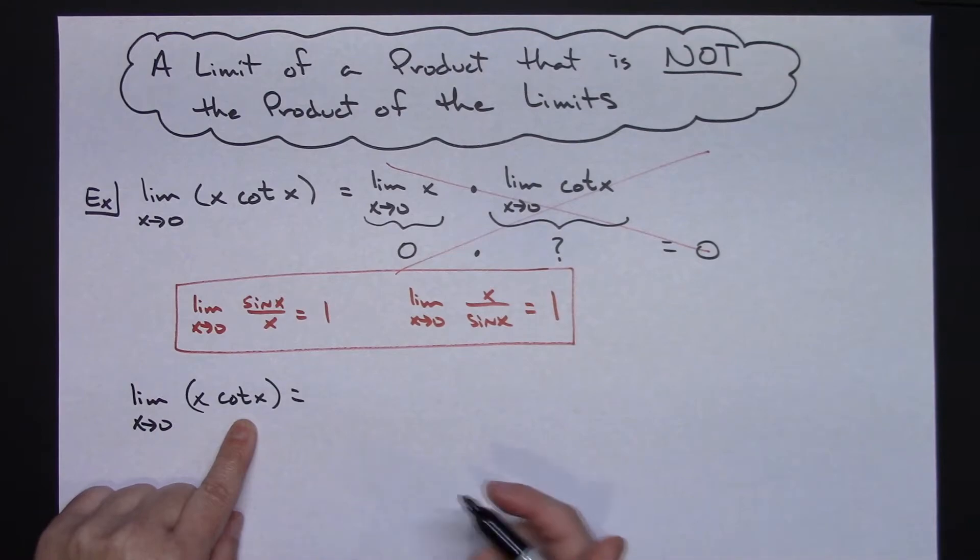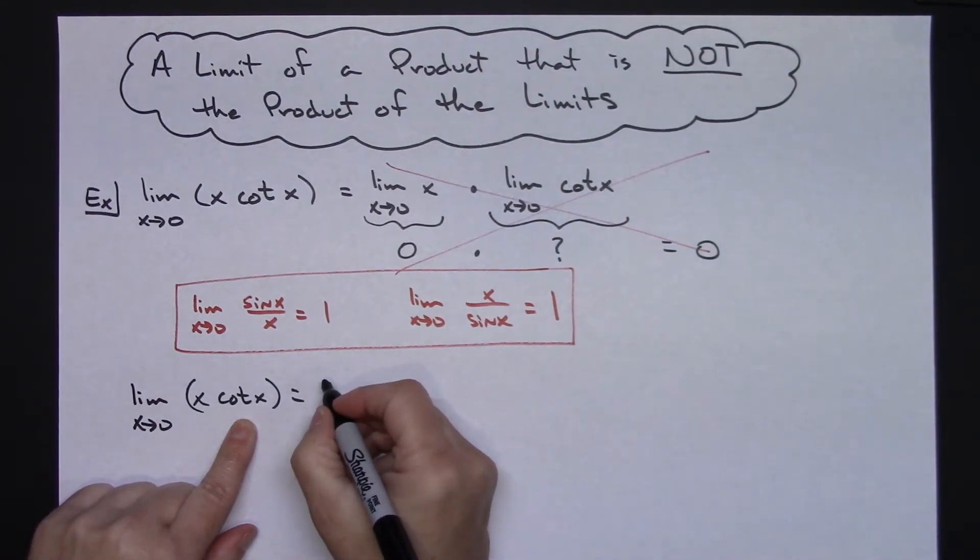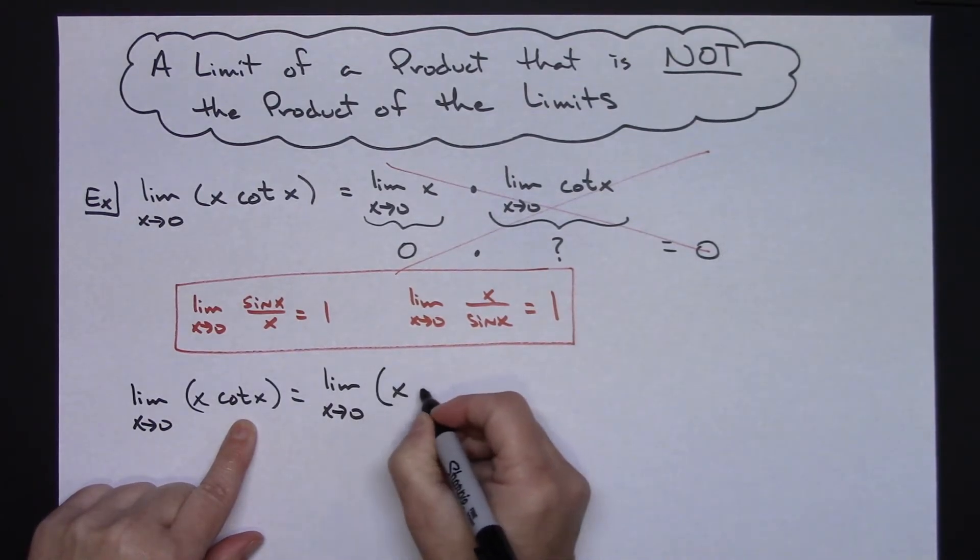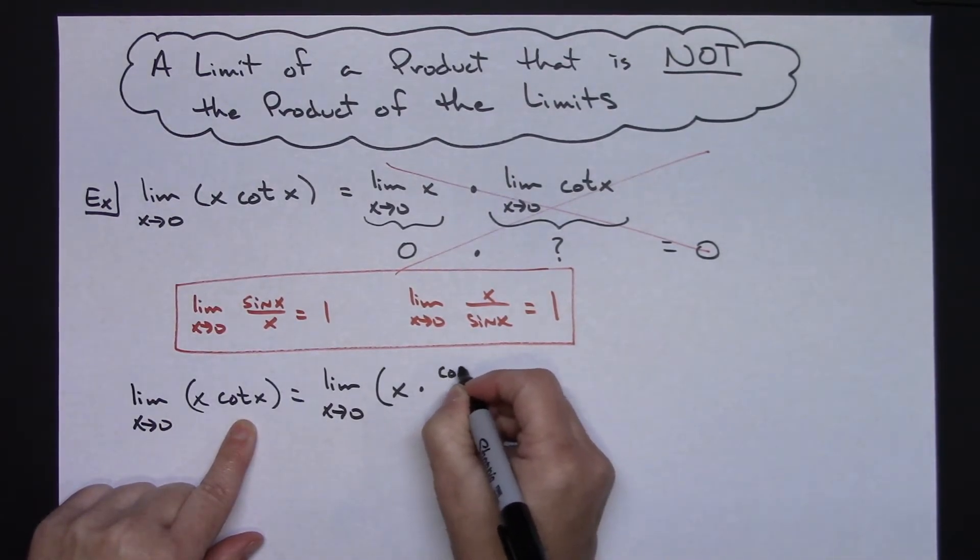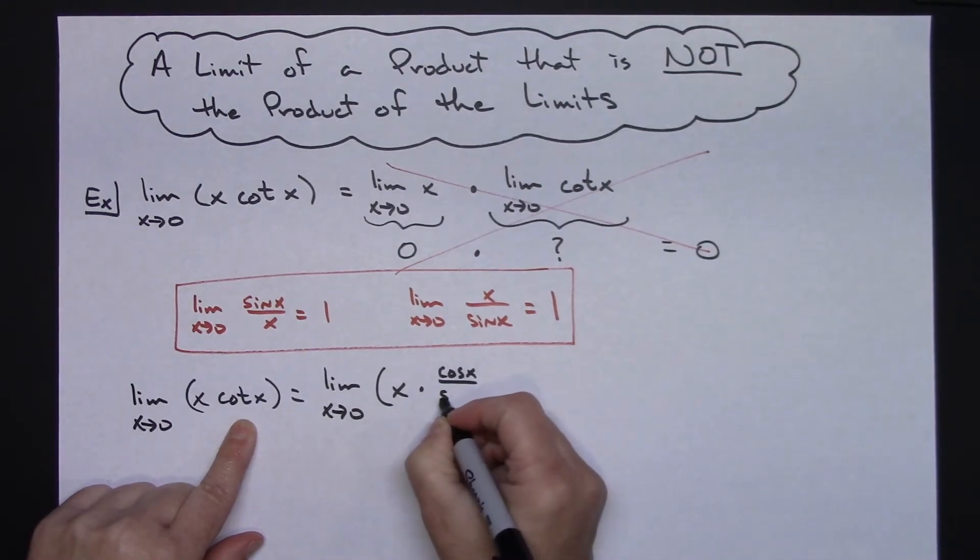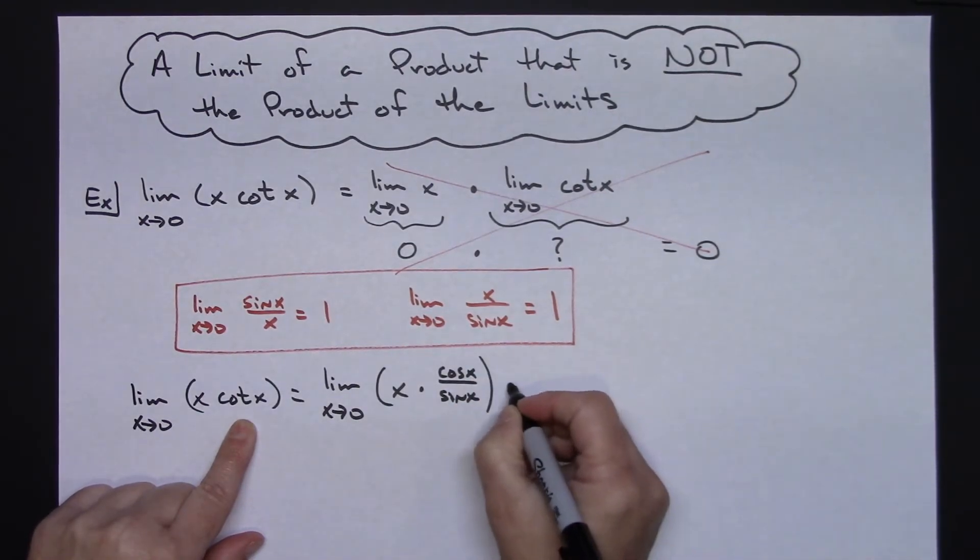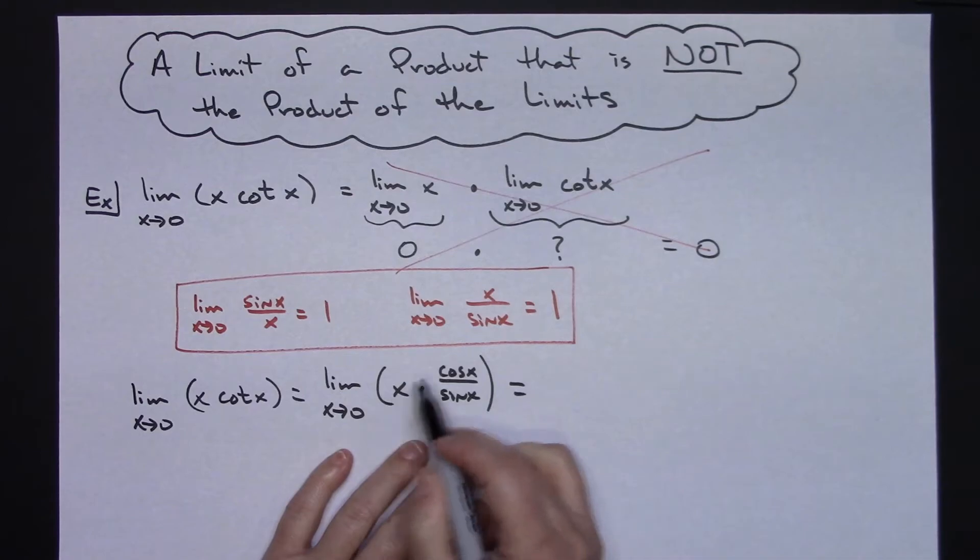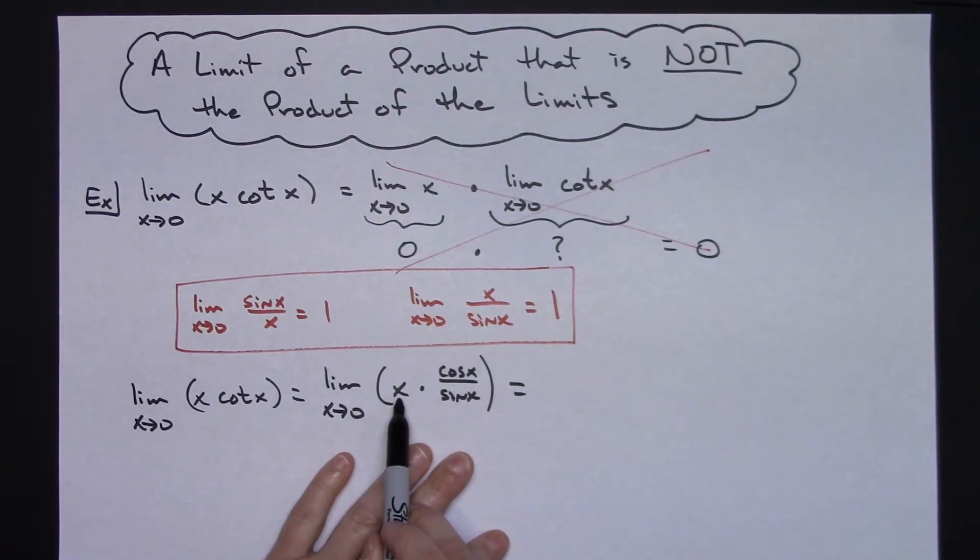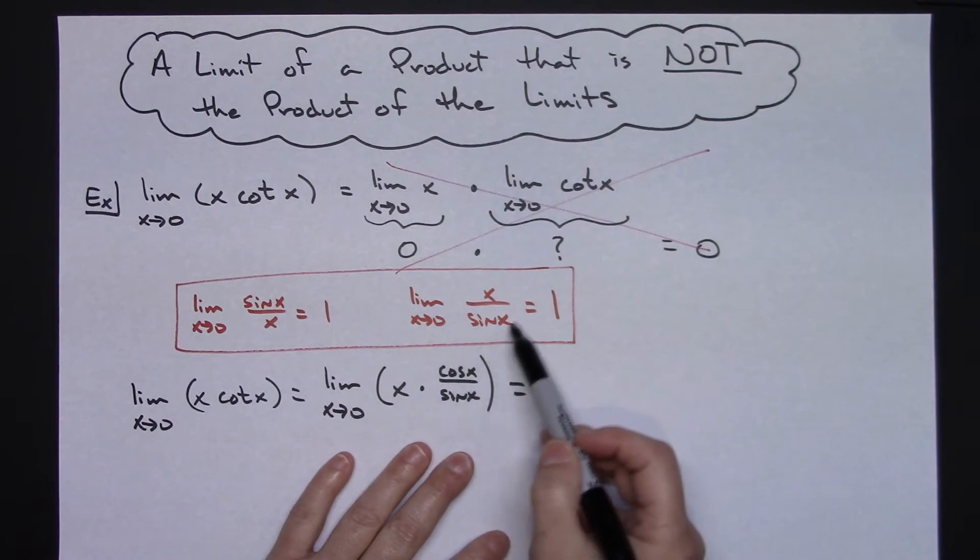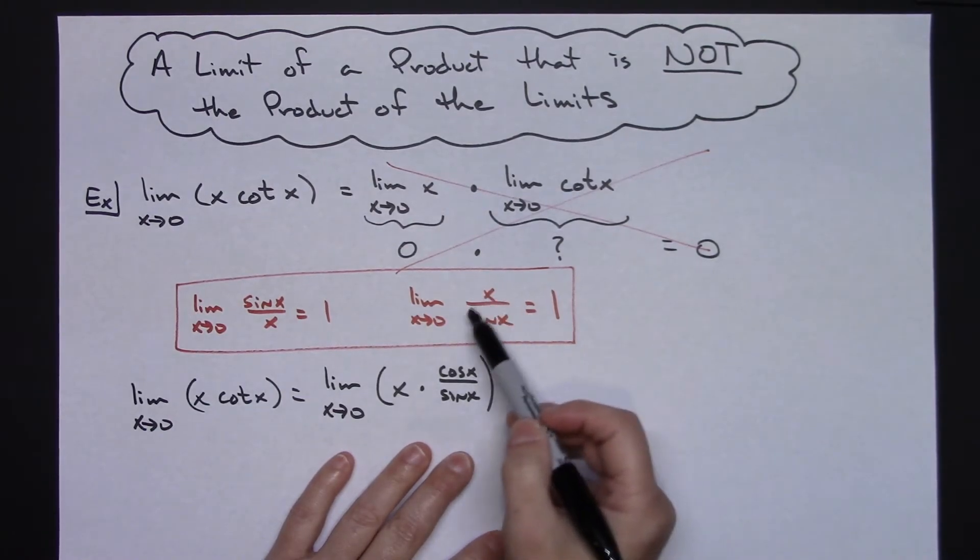So then I'm going to rewrite this as the limit as x approaches 0 of x times cosine x over sine x. And then from here, I'm going to do some manipulation. This x is in the numerator, this sine x is in the denominator. That's something I know to be 1.